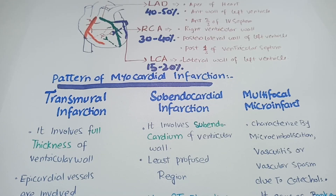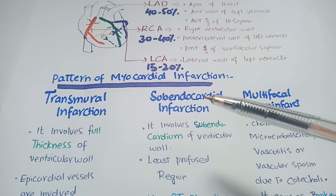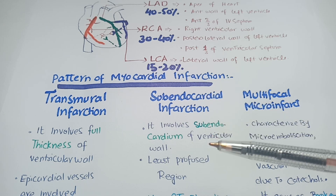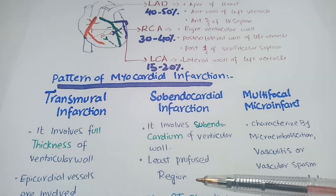Before studying the patterns of myocardial infarction, the heart has three layers: the innermost is called the endocardium, the middle one is the myocardium, and the outer one is called the pericardium or epicardium. The vessels of the heart are present on the outer side of the epicardium and first supply the pericardium, then the myocardium, and lastly the endocardium. So the endocardium is the least perfused area of the heart, and when the endocardium undergoes infarction, it is called subendocardial infarction.